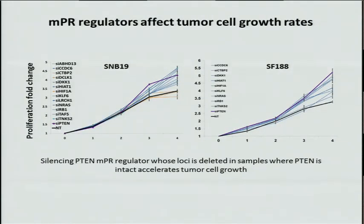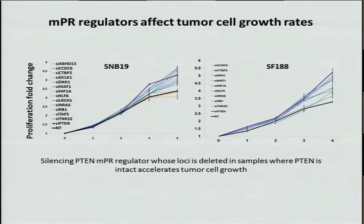Looking at regulators of PTEN — specifically regulators whose locus is deleted in samples where the PTEN locus is intact — we compared the effects on cell growth rate of silencing PTEN and silencing each of these regulators. Silencing each of these regulators led to downregulation of PTEN, and you can see that in blue, silencing these regulators leads to a similar, if not the same, reaction in cell growth. These genes have never been associated with cancer before, but their effect on PTEN is leading to the same outcome as silencing PTEN itself. Each of these genes may be deleted in very few tumors, but there are 500 of these, and combinations of deletions at each of these loci will have the same effect.